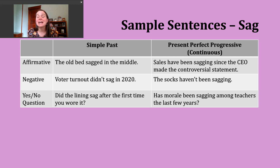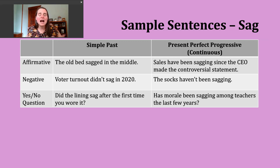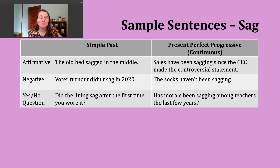Finally, to make a yes-or-no question in the present perfect progressive, start with 'have' or 'has' — whichever matches your subject — then the subject, then 'been,' then the -ing form of the verb. For example: 'Has morale been sagging among teachers the last few years?' — using that meaning of something declining in amount, referring to feelings of making a difference and having a good attitude towards work. Unfortunately, the answer to this question is probably yes, it has.